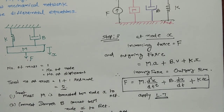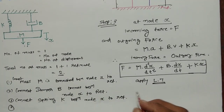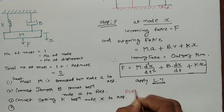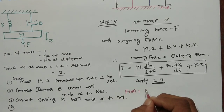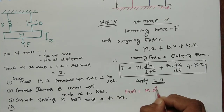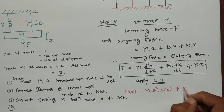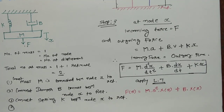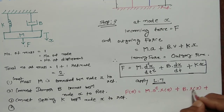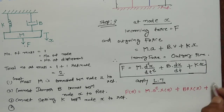Now applying the Laplace transform to both sides, the equation becomes: F(s) = Ms²X(s) + BsX(s) + KX(s).